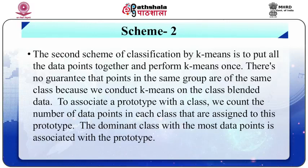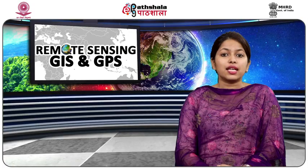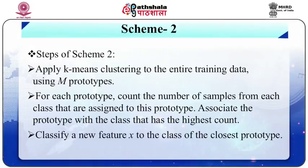Now we will discuss scheme number two. The second scheme of classification by k-means is to pool all the data together and perform k-means once. There is no guarantee that points in the same group are of the same class, because we conduct k-means on class-blended data. To associate a prototype with a class, we count the number of data points in each class that are assigned to this prototype, and the dominant class with the most data points is associated with the prototype. During classification of a new data point, the procedure then goes in the same way as in scheme number one. The steps for scheme number two are: apply k-means clustering to the entire training data using M prototypes; then for each prototype, count the number of samples from each class assigned to the prototype; associate the prototype with the class that has the highest count; and then classify a new feature vector x to the class of the closest prototype.